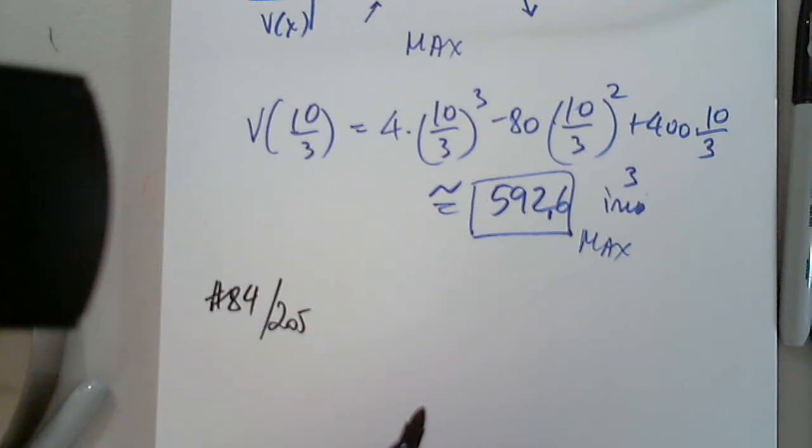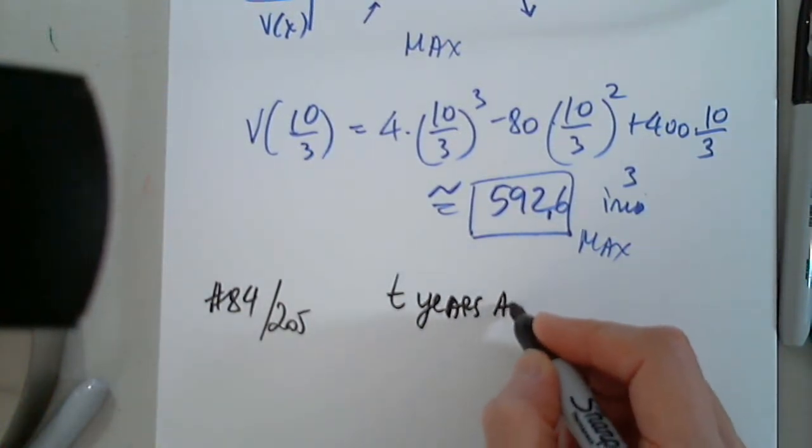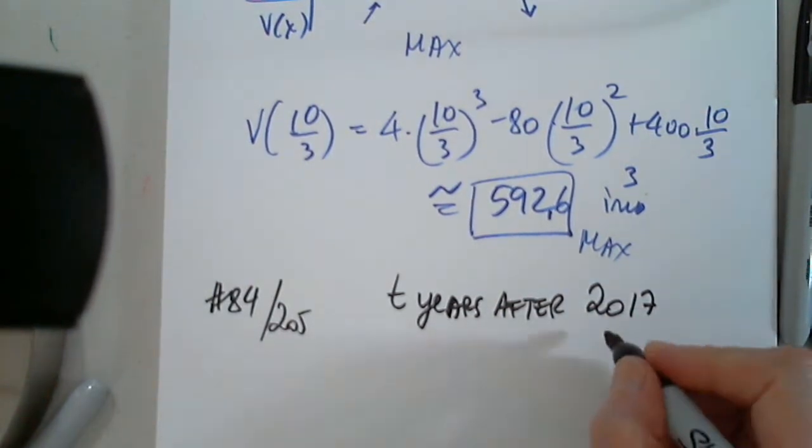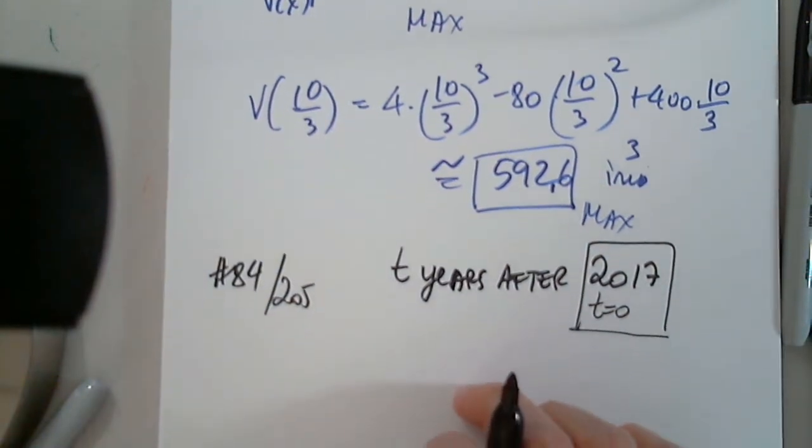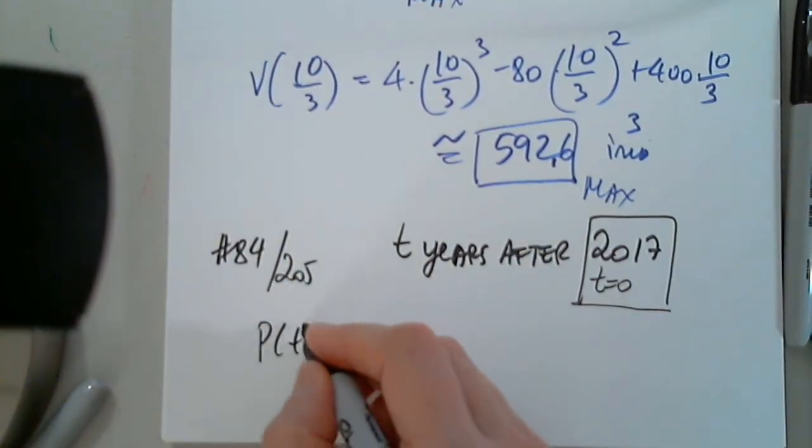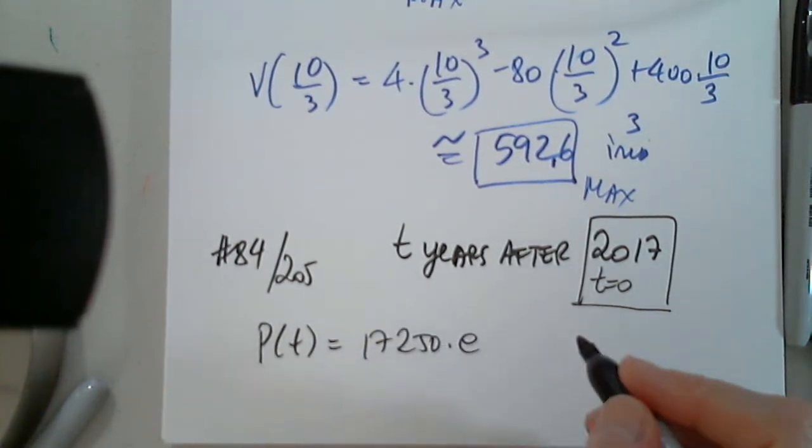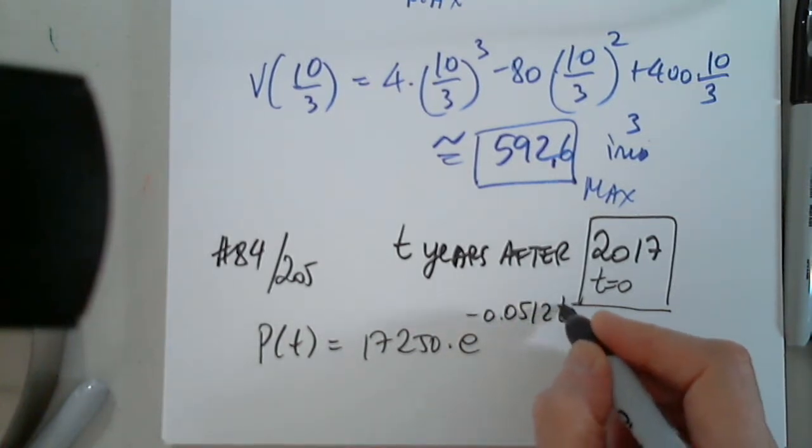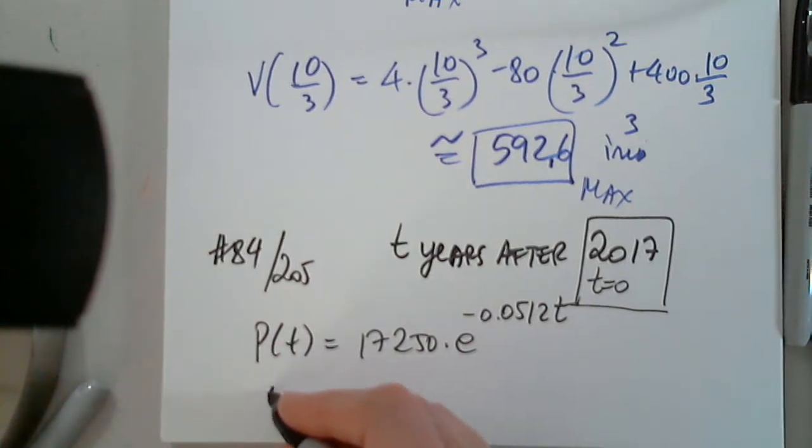T years after 2017, which means T equals 0 represents 2017. They are giving us a function P(t) = 17,250·e^(-0.0512t). What will the population be in 2024?